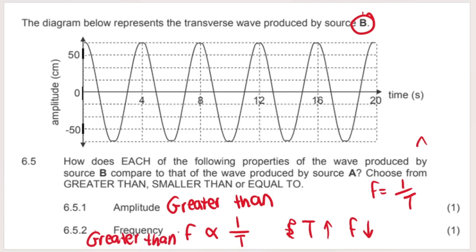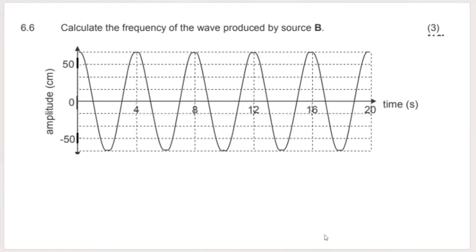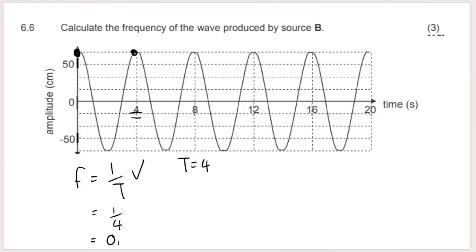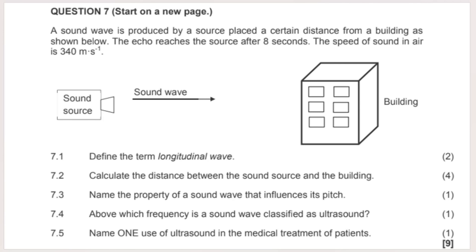Question 6.6 asks us to calculate the frequency of wave source B. Frequency = 1/T. We established that B's period is 4 seconds. Formula: f = 1/T. Substituting: f = 1/4. Therefore frequency = 0.25 Hz. Remember Hz is spelled H-Z — and you need to include your units to get the mark. Always: formula, substitution, answer with units.